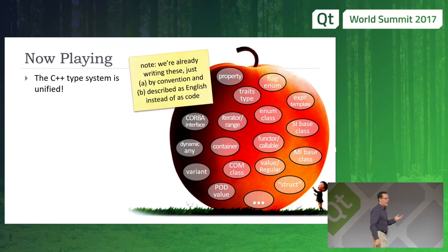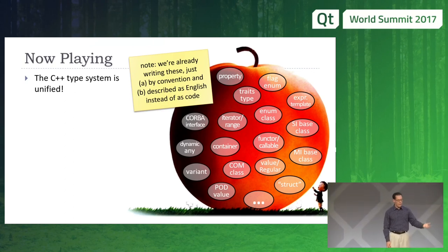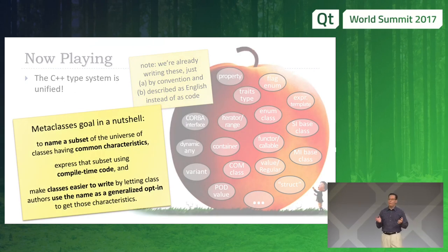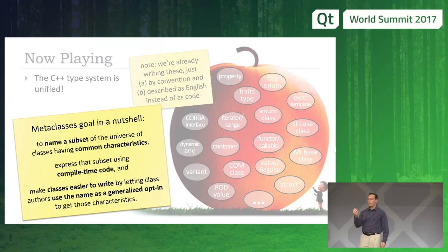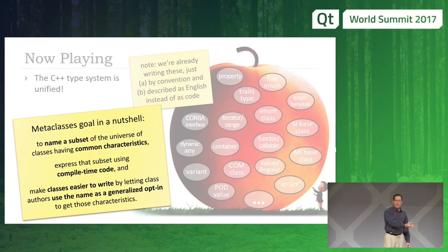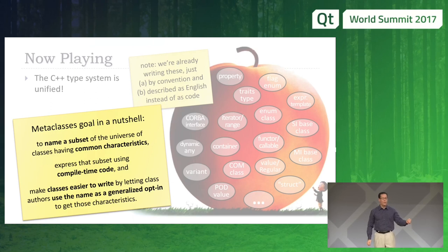We have such a flexible tool in the C++ class concept that it can model so many things. The trouble is that currently we do this by convention, and we document it in English instead of in code. So the goal of my project in a nutshell is to be able to give a name — just like the names we already use — but a code name, a compilable name. And as soon as you make it compilable, it is a word of power. To express that name in compile-time code, with the idea that it's going to make classes easier to write.